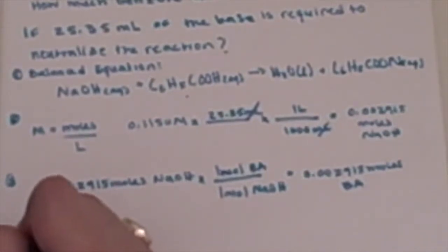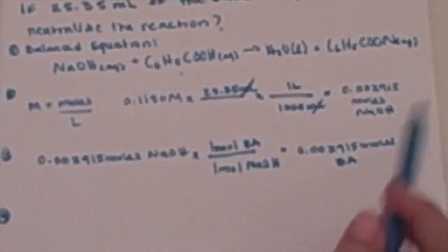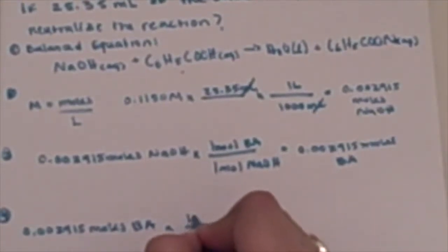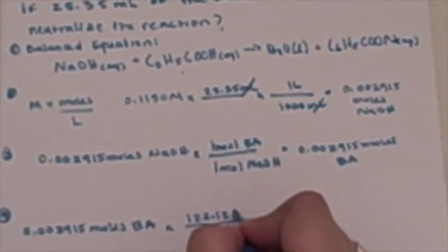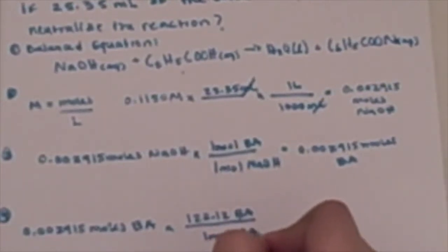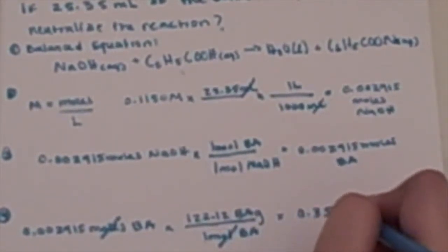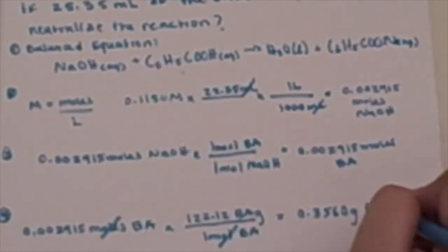The fourth part, now we have it in moles, but the question asks us to find it in grams. Once we take the moles of benzoic acid, we can use its formula weight, which was given in the problem as 122.12 grams of benzoic acid equals one mole of benzoic acid. Once we cancel out the moles on the bottom, we're left with 0.3560 grams of C6H5COOH.